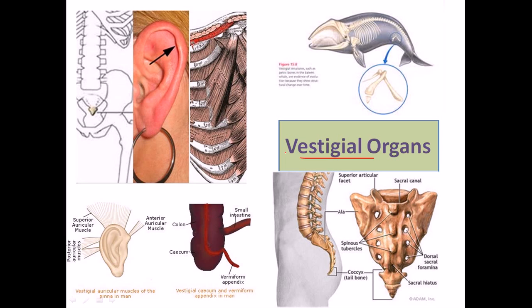About 90 different vestigial organs we can find in the body of a man. There are a lot of different organs that are actually helping us to understand that there probably must be a common ancestor. Our ancestors had all these organs but we don't need them anymore. Still, we are carrying those organs because we are inheriting the traits of our ancestors. This kind of vestigial organ helps us to prove the evolution theory much more.